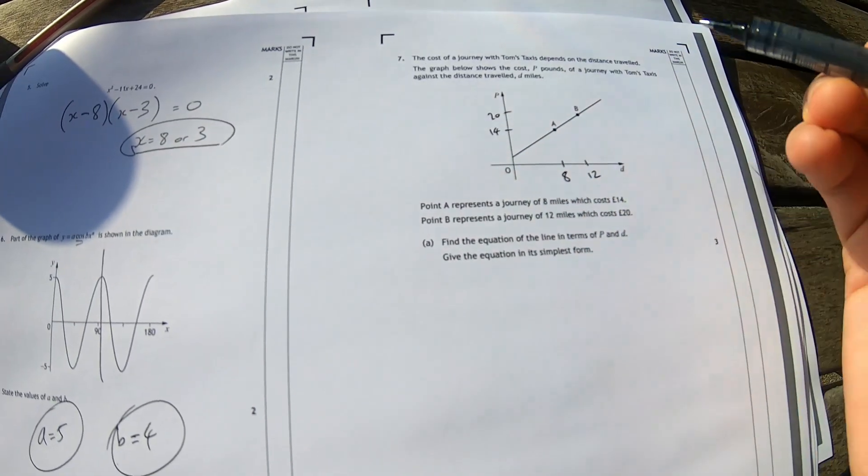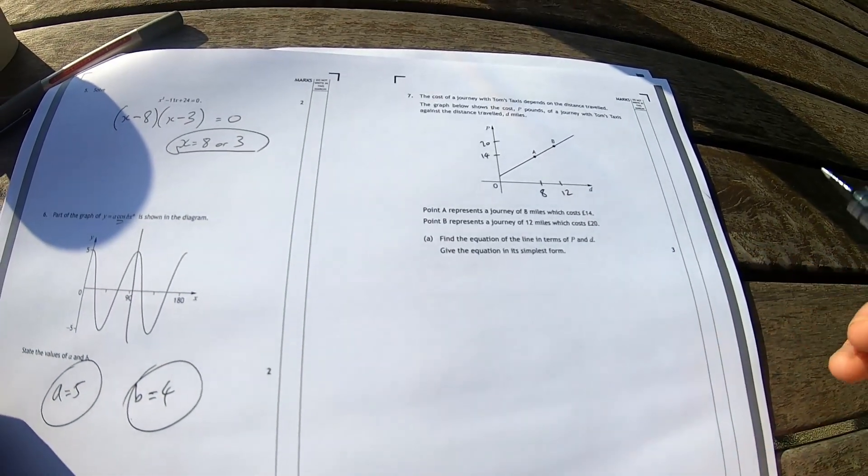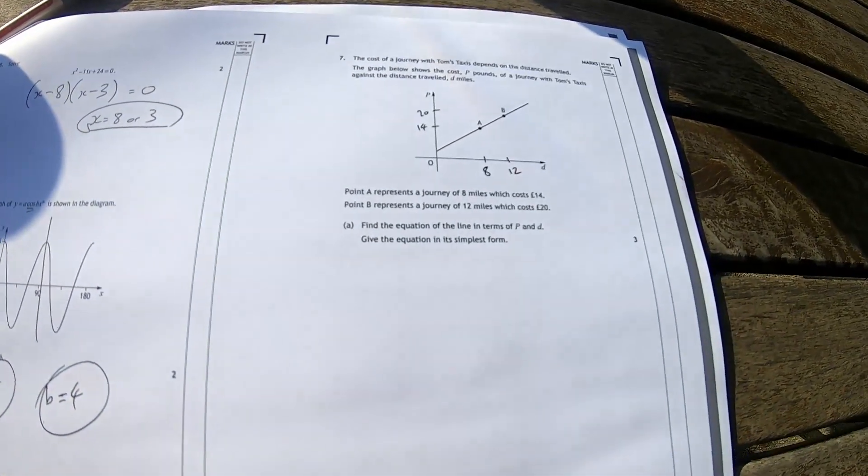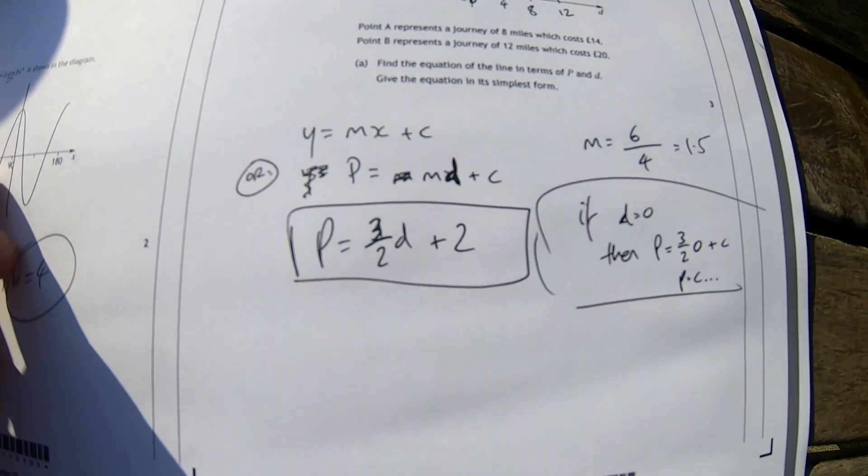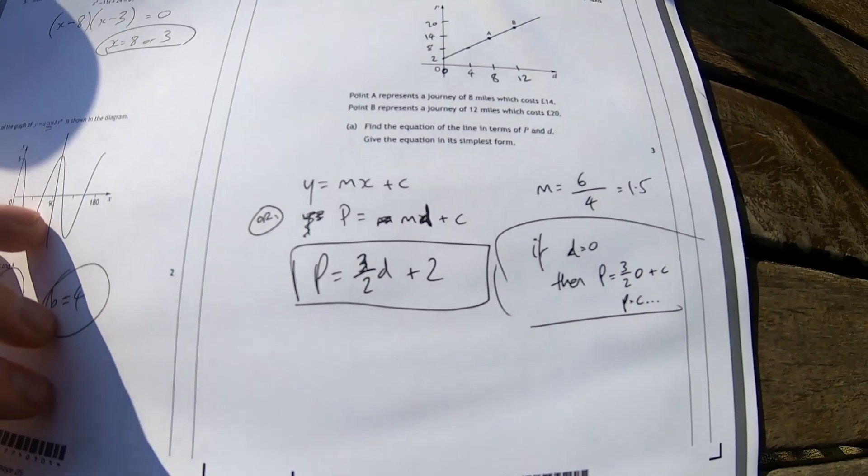Find the equation in the lines of p and d. Give the equation in its simplest form. p equals three on two d plus two. Still very easy.